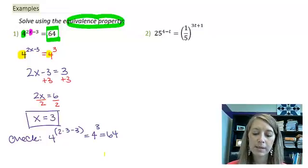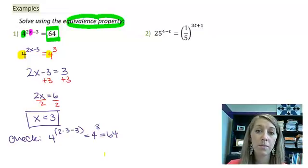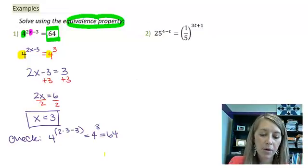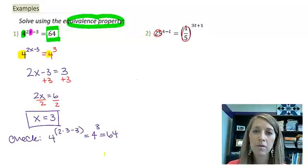Let's move over to example 2. 25^(4-t) = (1/5)^(3t+1). We want to solve that one by again using the equivalence property. What we want to do is get the bases to match. I'm going to let you pause the video to see if you can do this example on your own. In this one, I'm going to have to manipulate both bases, and I'm going to manipulate them so they are both a power of 5.